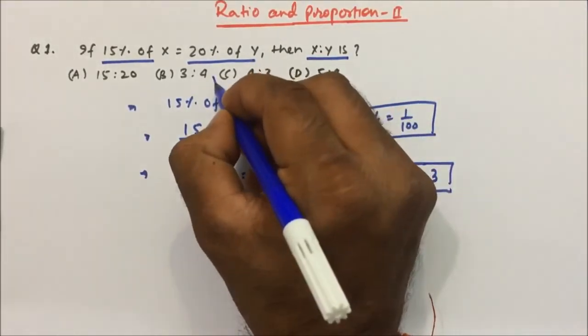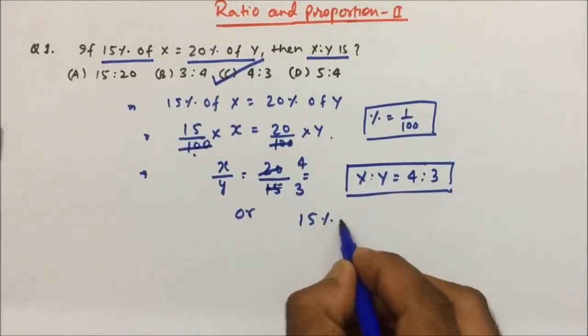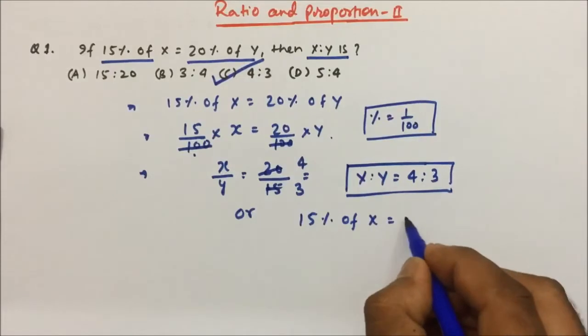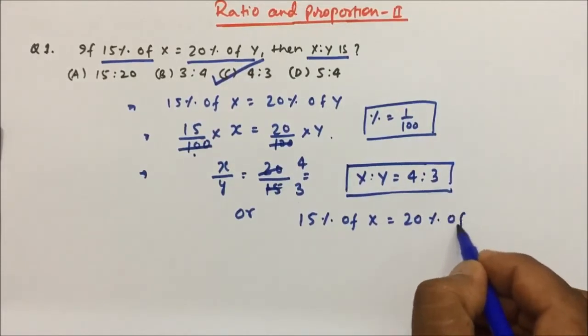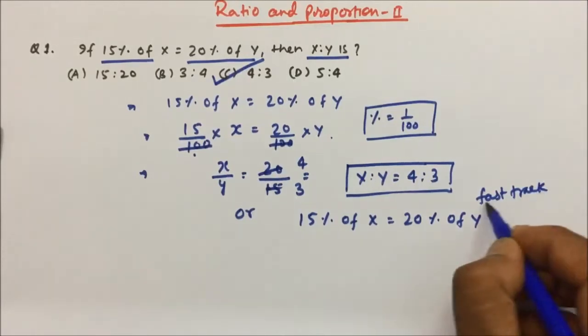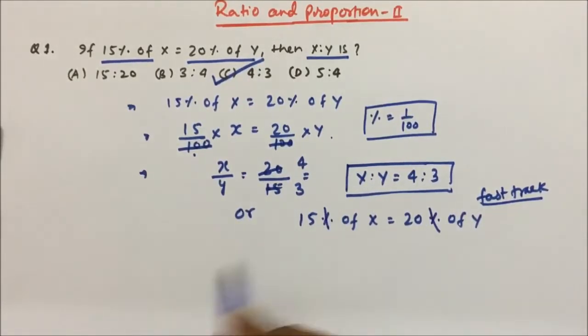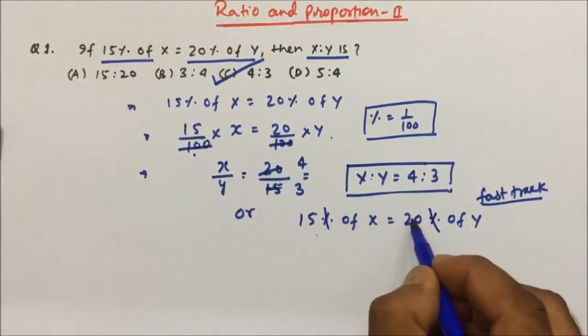Or we can directly do it like this - 15% of x equals 20% of y. This is a fast track method. See, this percentage and this percentage will get automatically cancelled because the same thing is multiplied on both sides. So you can cancel it.